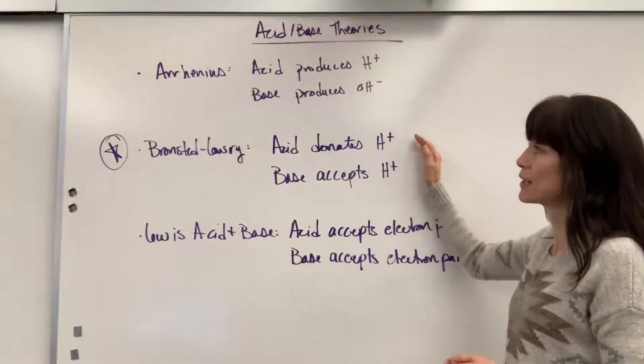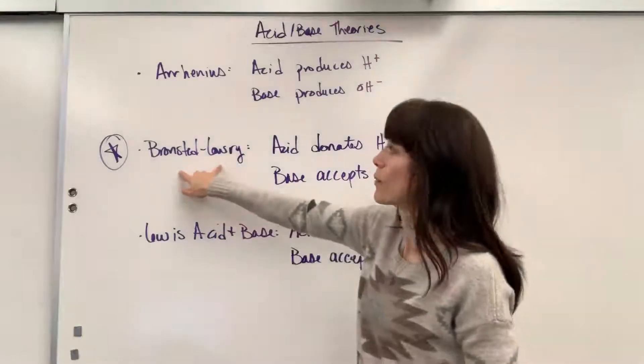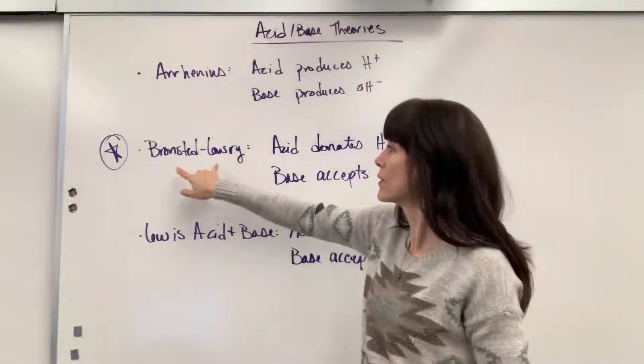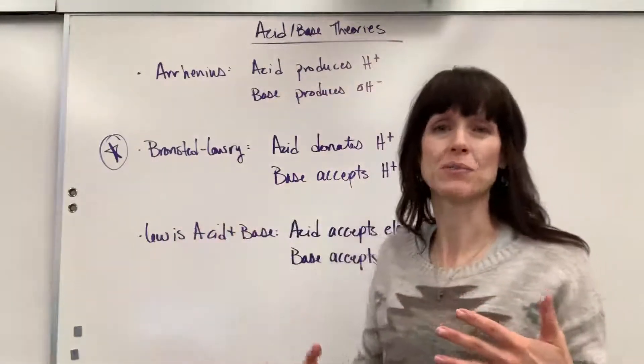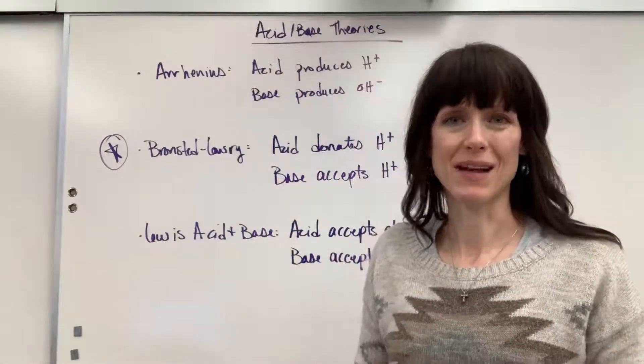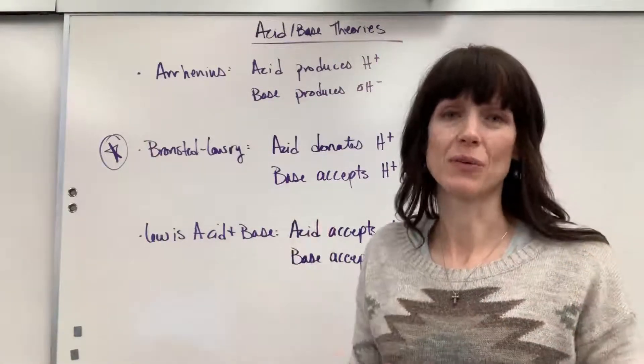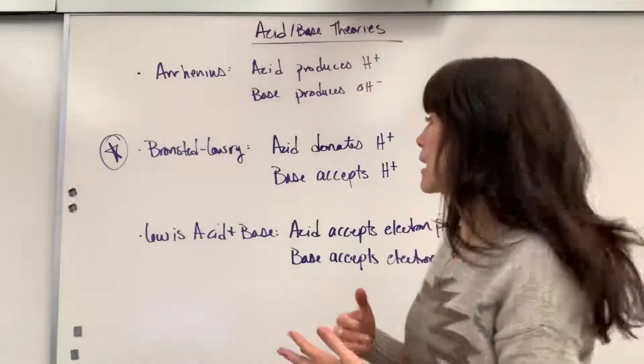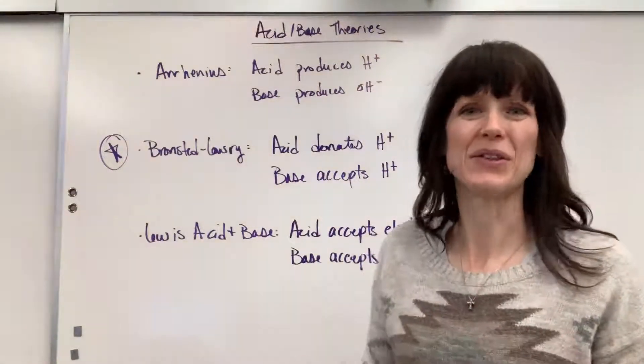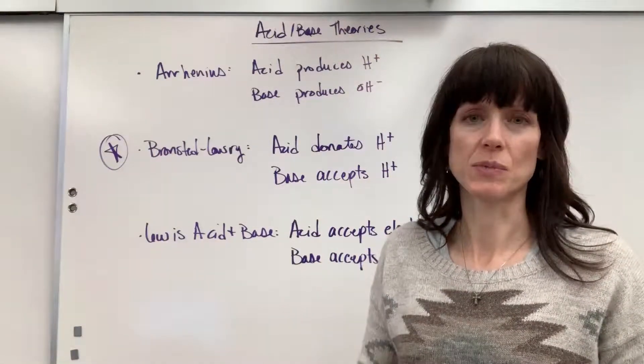So it was in the early 1900s, super interesting, two men, Bronsted and Lowry, they were each working on this. And within a nine month period, they both came up with the same answer. They were completely independent of one another. Because they came up with this fabulous theory, lots of evidence to support it...